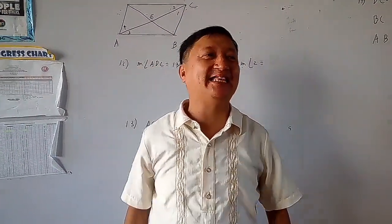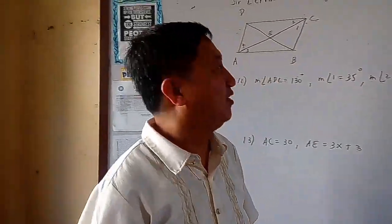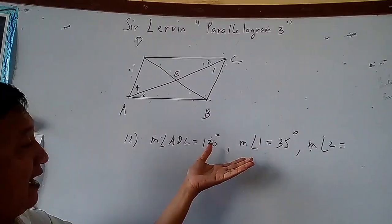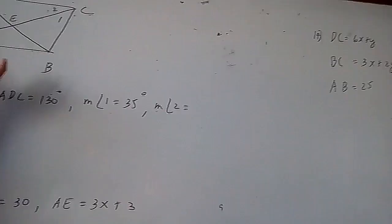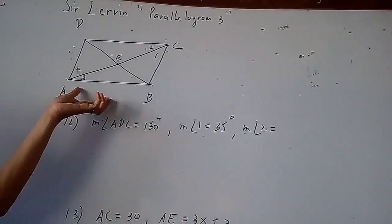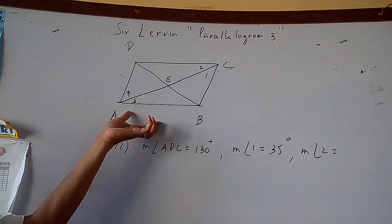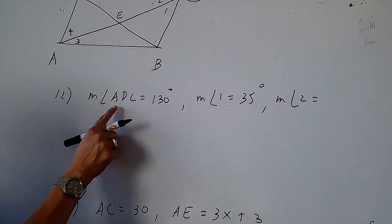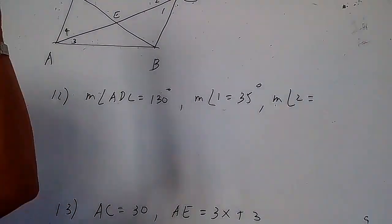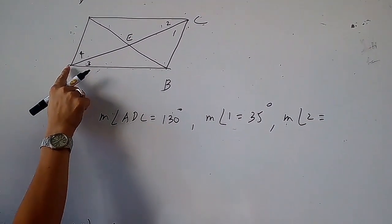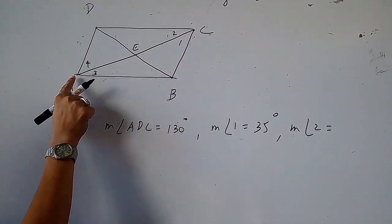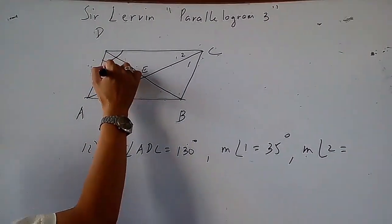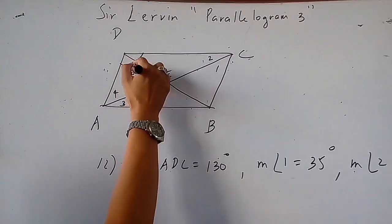Welcome back to the channel. We are asked to solve numbers 12, 13, and 14 given these figures and given this parallelogram. In number 12, the measurement of angle ADC is 130 degrees.